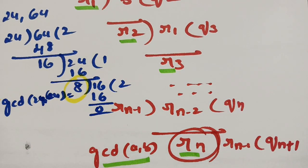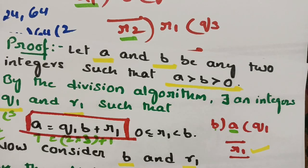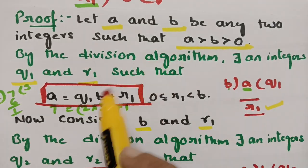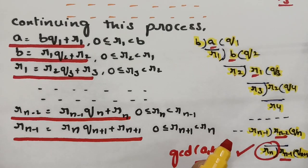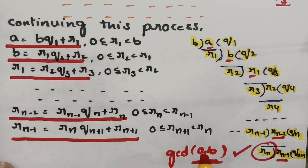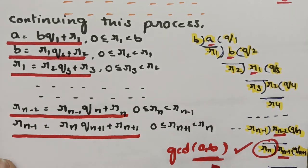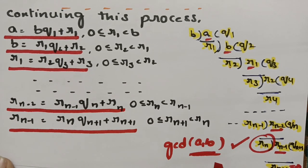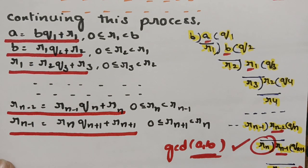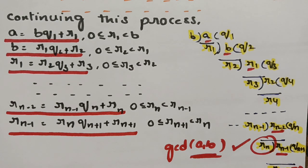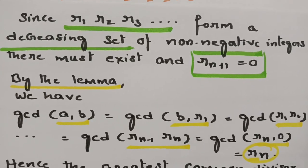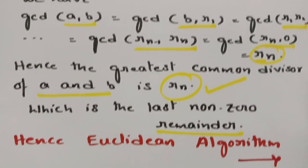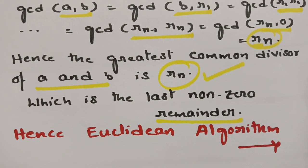These are all the steps which you have to take for each and every division — we have to apply the division algorithm. These are the equations, and finally Rn+1 = 0. Therefore the GCD is determined by this process. This is the most important theorem from number theory.